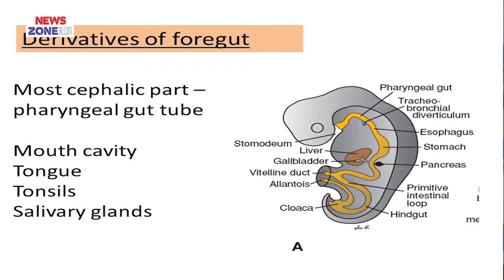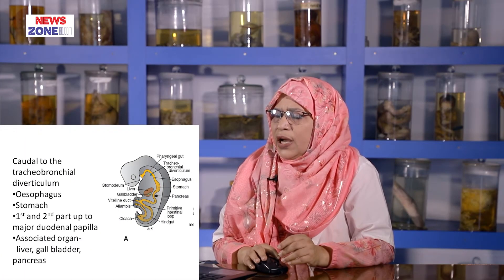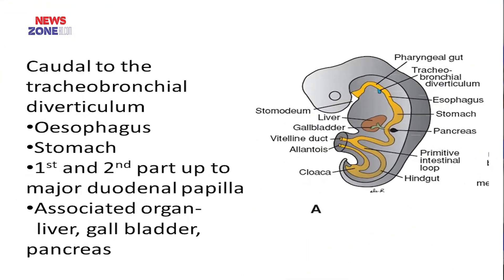The derivatives of the foregut: the most cephalic is the pharyngeal gut, from which develop the mouth cavity, tongue, tonsil, and salivary glands. The foregut — from the tracheobronchial diverticulum to the arise of the liver bud — gives the esophagus, stomach, and duodenum (first and second parts up to the major duodenal papilla), and also associated organs like the liver, gallbladder, and pancreas.